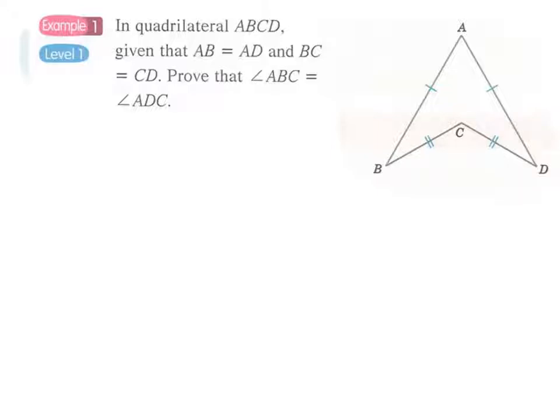Prove that angle ABC, this angle, equals to this angle. And obviously, we just can't prove these two angles directly equal to each other. Actually, we have to prove a pair of congruent triangles first.